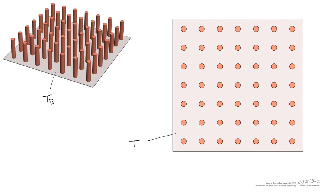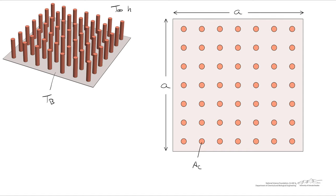Let's take a look at our array from two different perspectives. We know the temperature of the base, the ambient temperature T_infinity, and we have some idea of the heat transfer coefficient. Let me dimension our base — in this case it will be a square with dimensions A on both sides. The area of the base equals the total area A-squared minus N (the number of fins) times the cross-sectional area of each fin. In this case I've got a 7 by 7 array, so N equals 49 fins.